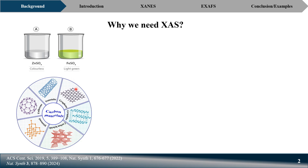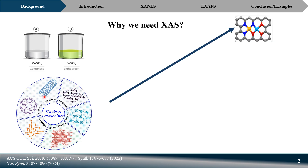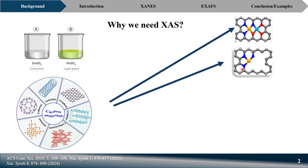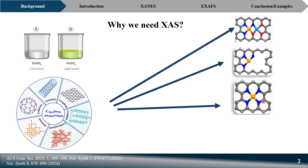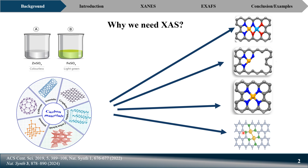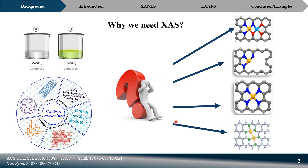Now the question is: how does the synthesized material really look? There are several possibilities. When you mix the metals with carbon, the metals could be located close together with a short distance between them. Or there could be a defect in the carbon material. Or there is no defect but one metal is very far from the other within the support.